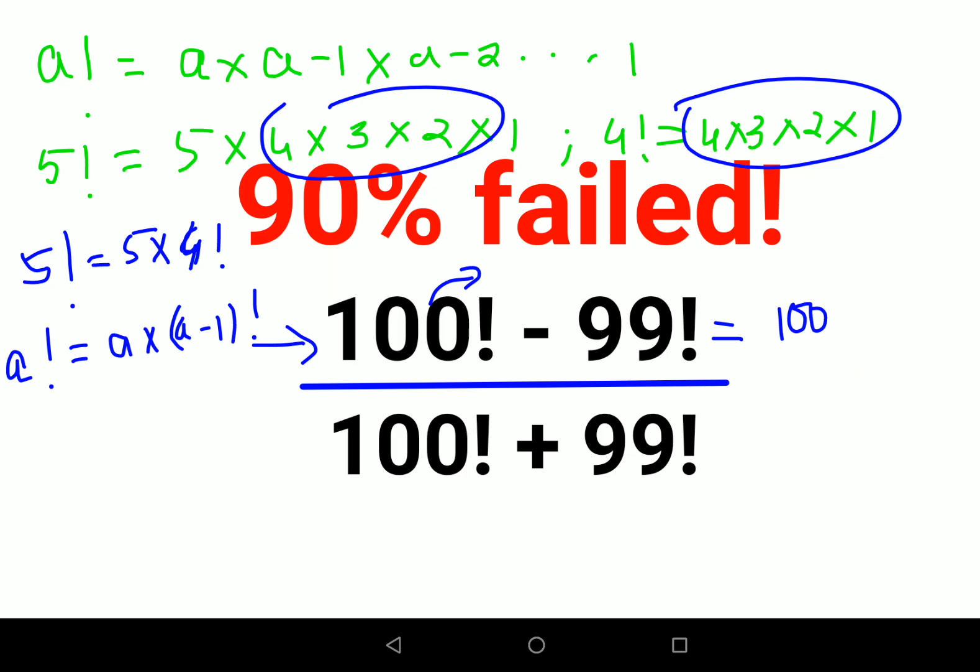What we can do is take 99 factorial out as a common factor. In the numerator, I'm left with 100 - 1. In the denominator, taking 99 factorial out, I'm left with 100 + 1.